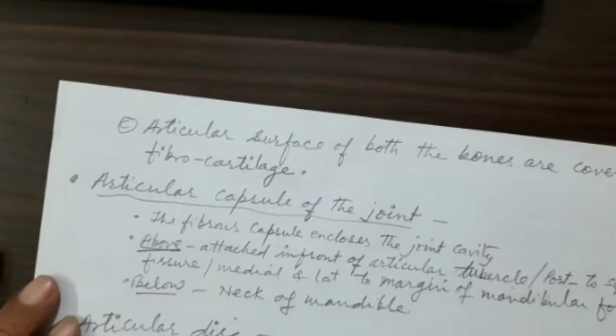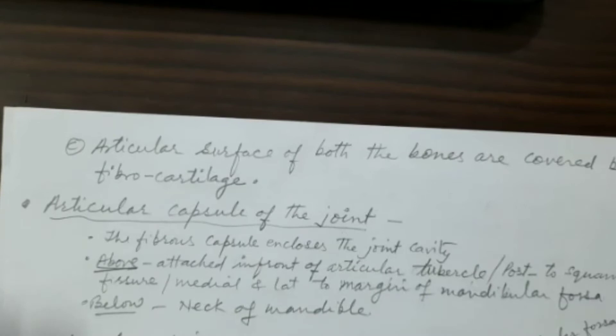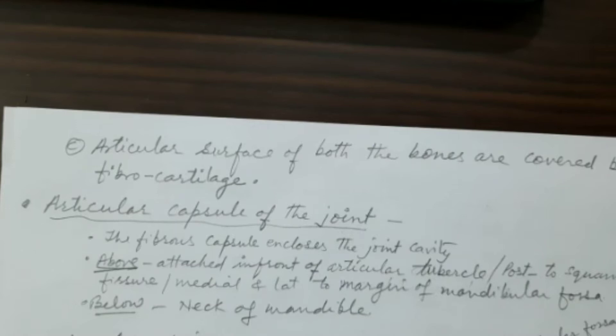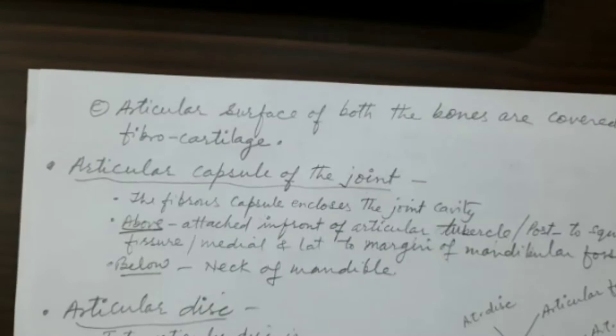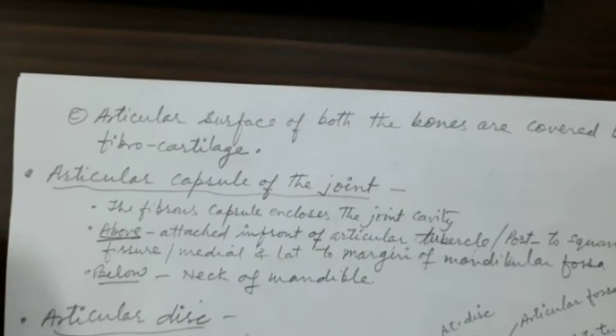An important point to remember: in most synovial joints the ends of articulating bones are covered by hyaline cartilage. However, in the temporomandibular joint, both the head of the mandible and the mandibular fossa and articular tubercle of the temporal bone are covered by fibrocartilage — not hyaline cartilage. This is a key distinction that must be remembered.